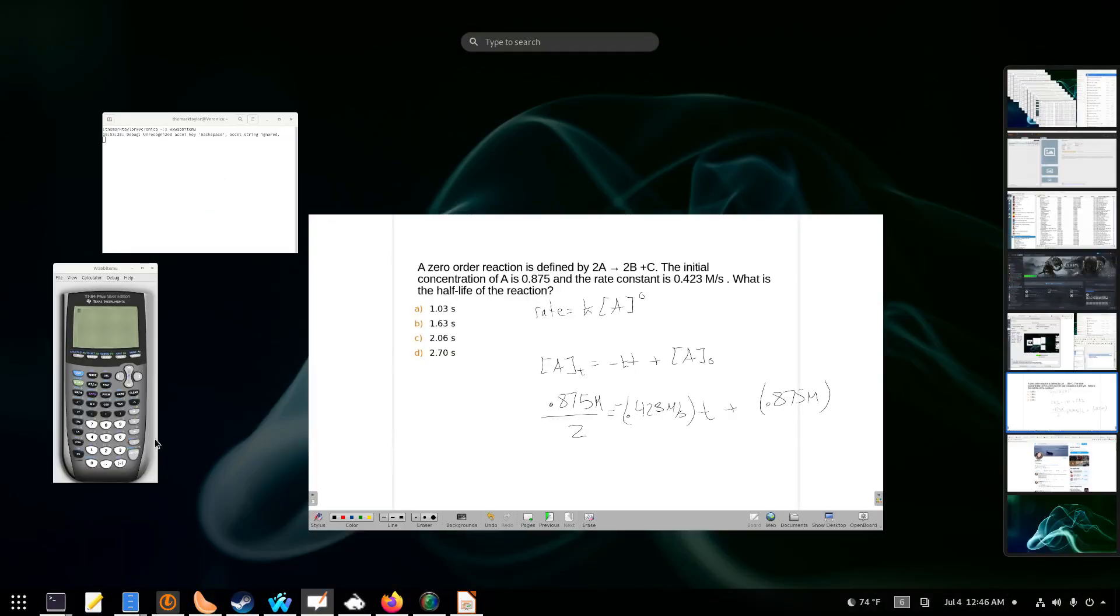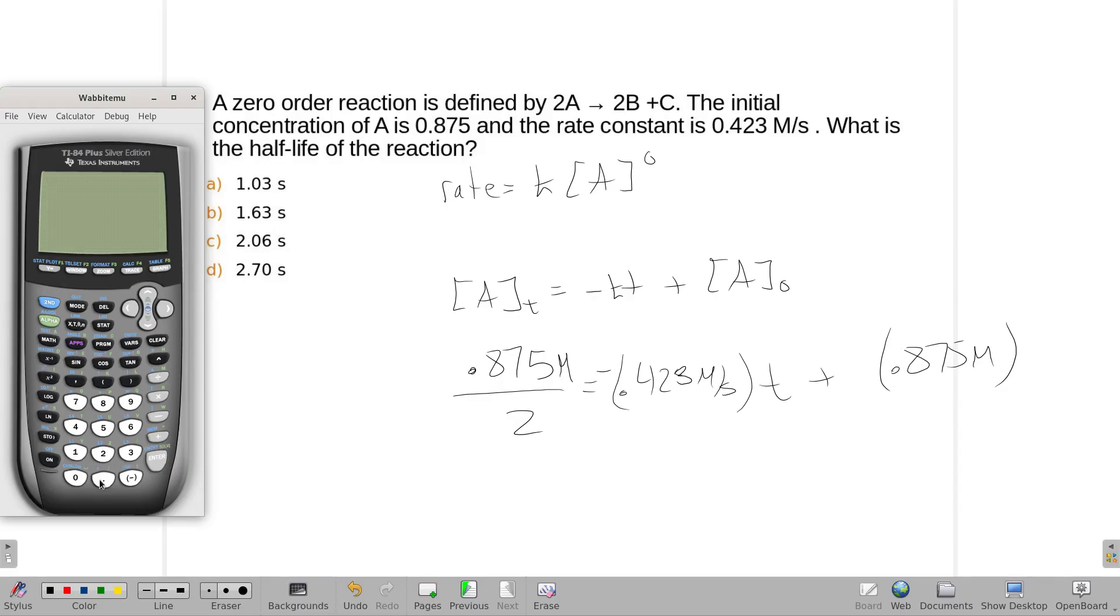So we're going to start on the left with the 0.875 divided by two and then we will subtract 0.875, and then I'm going to divide by negative 0.423 and I get a time of 1.03 seconds.